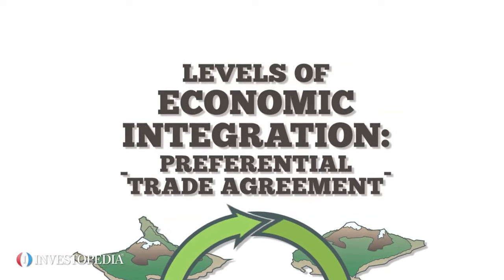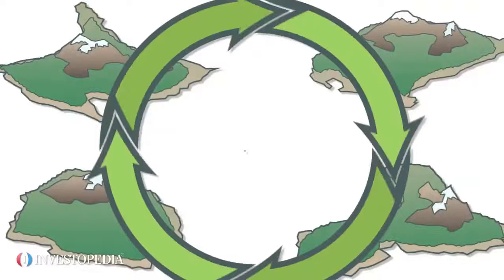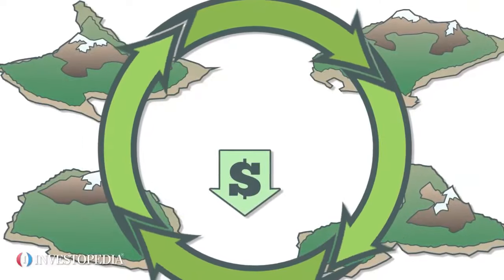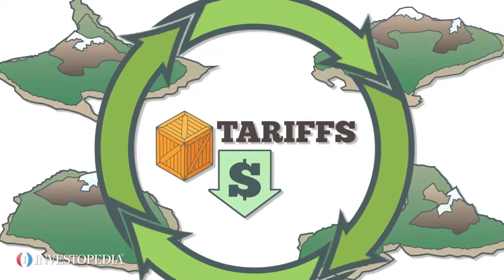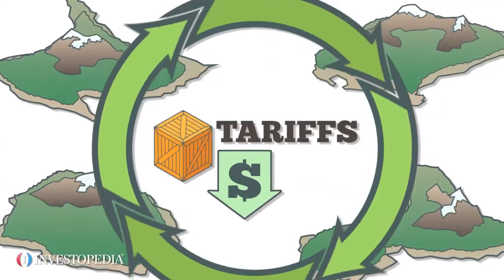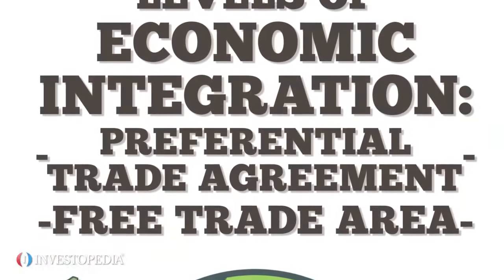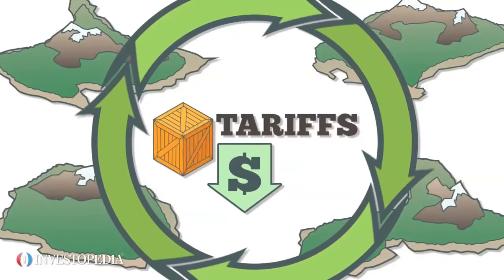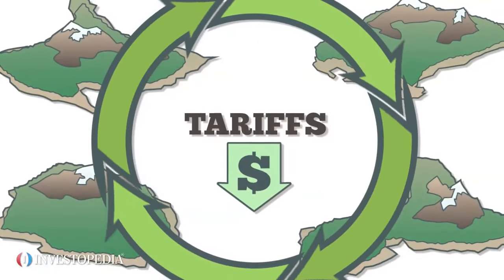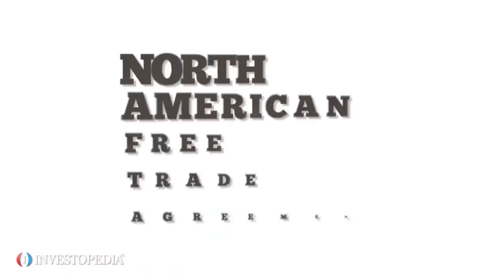A preferential trade agreement is a trading block where members reduce or remove tariffs on certain goods imported and exported throughout their region. A free trade area is a block in which countries reduce or remove tariffs on all goods among member nations. An example is the North American Free Trade Agreement.